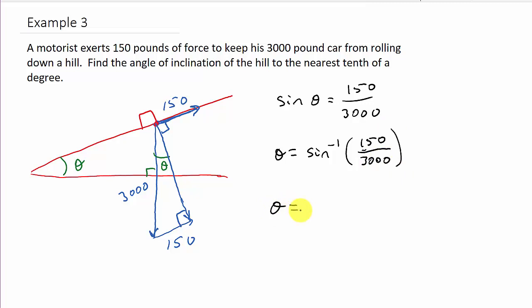And so, if we do the inverse sine of 150 divided by 3000, that gives us an angle, and I'm going to round it to one decimal place, that gives us an angle of 2.9 degrees.